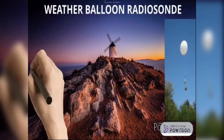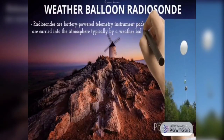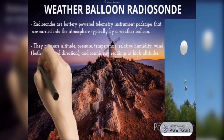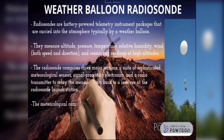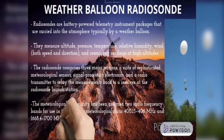The next application of FSK modulator is the weather balloon radiosonde. Radiosondes are battery-powered telemetry instrument packages carried into the atmosphere typically by a weather balloon. They measure altitude, pressure, temperature, relative humidity, wind, and cosmic ray readings at high altitude. The radiosonde comprises three major sections: a suite of sophisticated meteorological sensors, signal processing electronics, and a radio transmitter to relay measurements back to a receiver at the radiosonde launch station. The meteorological community has been assigned radio frequency bands for transmitting meteorological data, ranging from 400.15 to 406 MHz and 1,668.4 to 1,700 MHz.